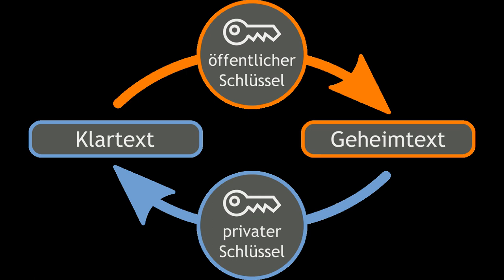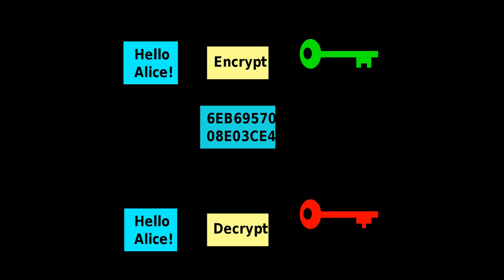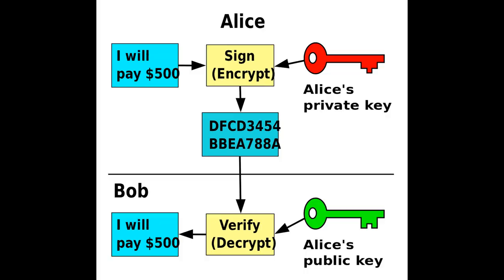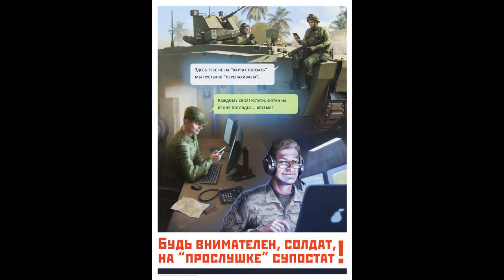The most obvious application of a public key encryption system is encrypting communication to provide confidentiality — a message that a sender encrypts using the recipient's public key can be decrypted only by the recipient's paired private key. Another application is the digital signature. Digital signature schemes can be used for sender authentication. Non-repudiation systems use digital signatures to ensure that one party cannot successfully dispute its authorship of a document or communication. Further applications include digital cash, password-authenticated key agreement, time-stamping services, and non-repudiation protocols.